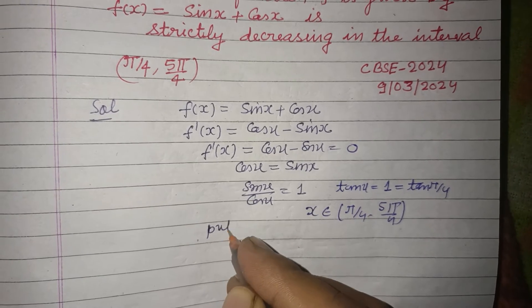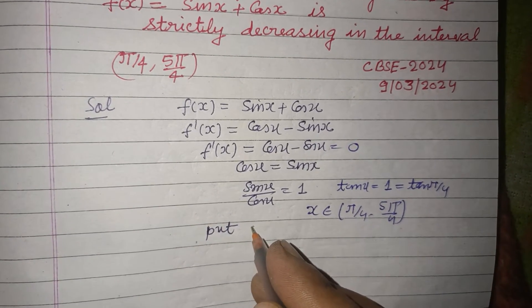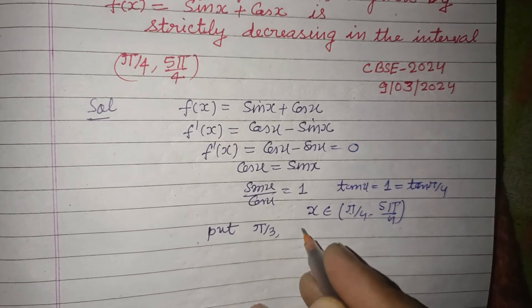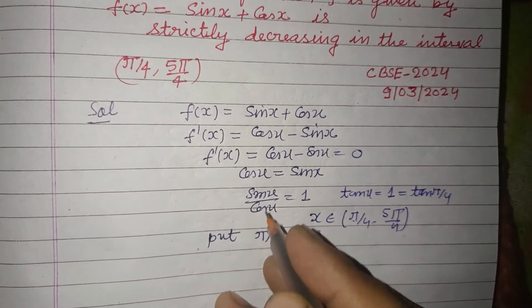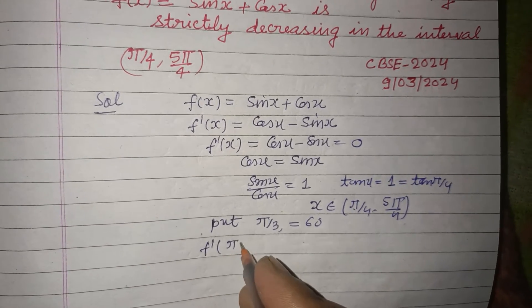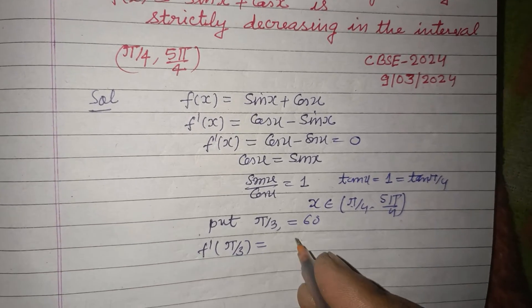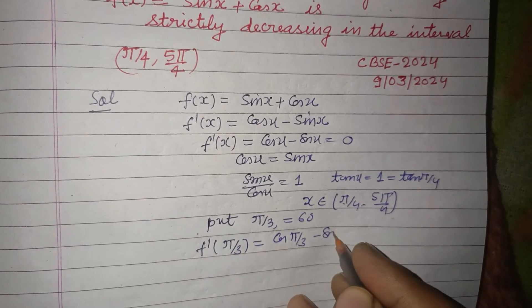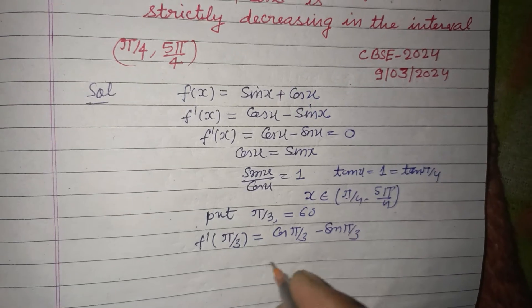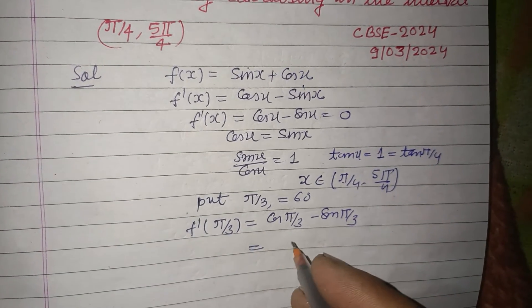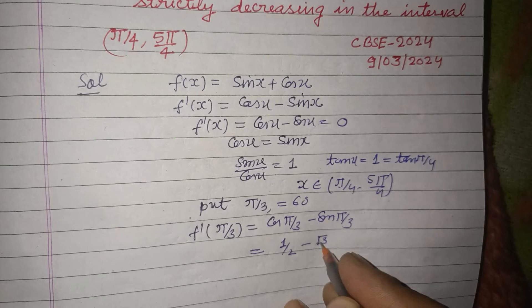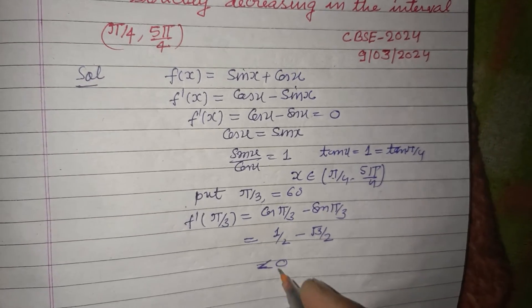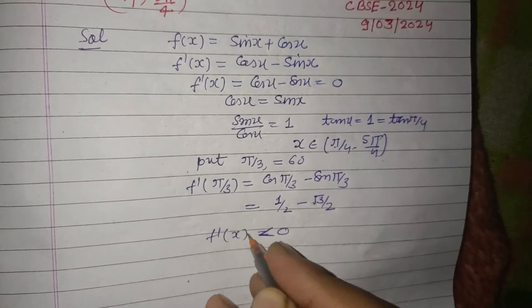Now, put the value, let it be π/4, we put π/3. f'(π/3) = cos π/3 - sin π/3. Cos π/3 is 1/2 and sin π/3 is √3/2, which is negative, which is less than 0. So f'(x) is less than 0.